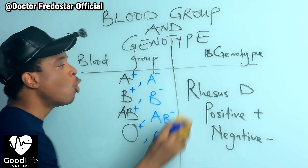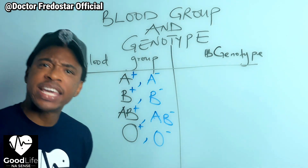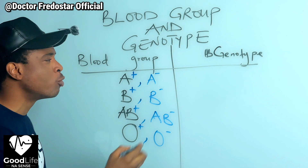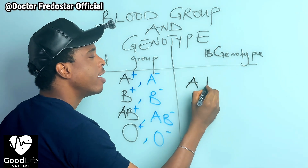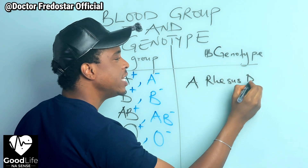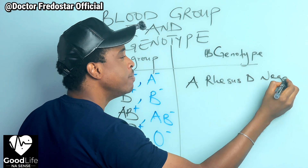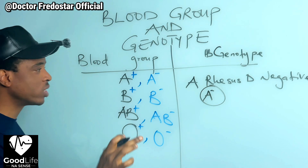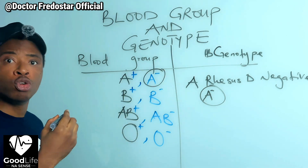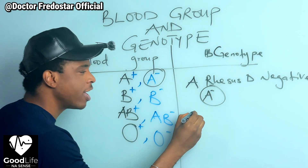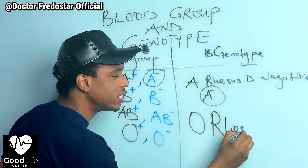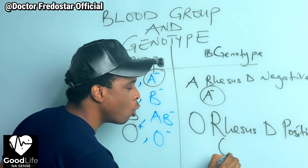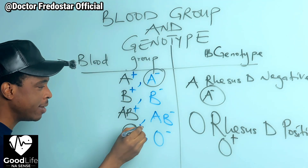So that is what blood group is. Now you understand. So if you go for blood group test and they say you are A Rhesus D negative, it means you are A negative. If they say you are O Rhesus D positive, it means you are O positive.